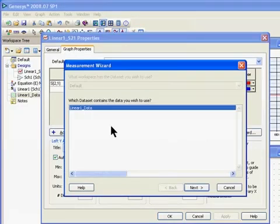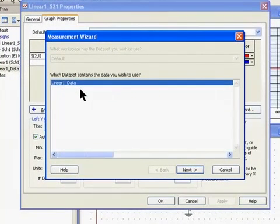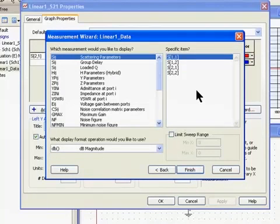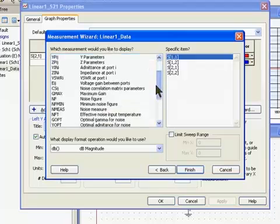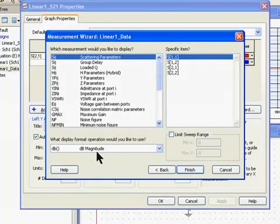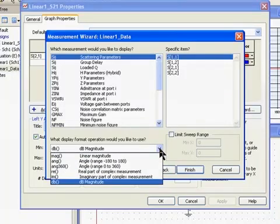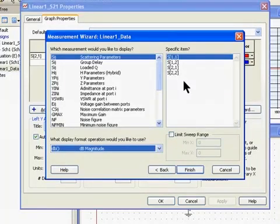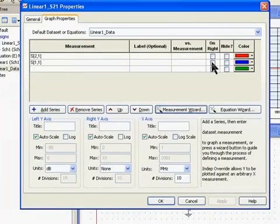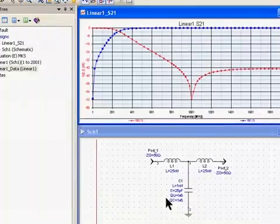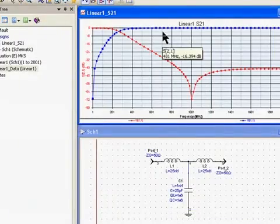If I click on measurement wizard, it asks me what data set I want to use, and linear one data is the only one in the workspace. I click next, and it tells me what the available linear measurements are. On the left, we have S parameters, group delay, loaded Q, noise parameters. At the bottom, it asks what format you want it displayed. The first one's S11. I'm going to click on that, put it on the right, and then say okay. It added S11 to the graph.